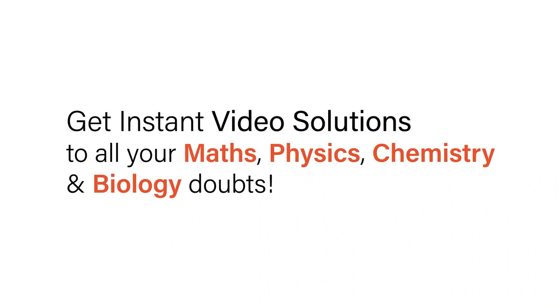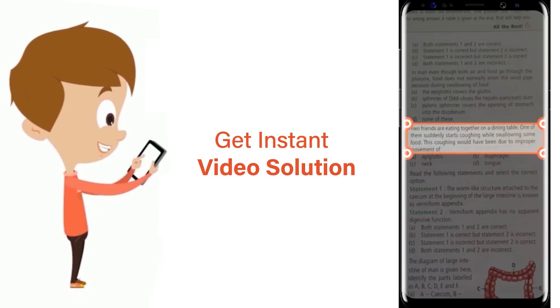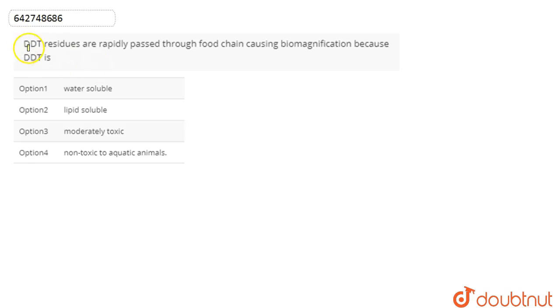With Doubtnet, get instant video solutions to all your maths, physics, chemistry and biology doubts. Just click the image of the question, crop the question and get instant video solution. Download Doubtnet app today. In this question we are asked that DDT residues are rapidly passed through the food chain causing biomagnification because DDT is...